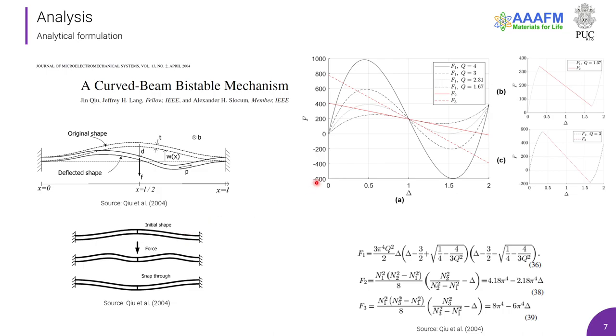The analytical formulation of a curved beam bistable mechanism was developed by Kiel et al., and they found that if a single curved beam is used, then it could not be bistable. This is better explained by these curves and equations. I'll not have enough time to discuss it in depth, but what is important is that for a double curved beam, the force displacement relationship follows the F1 and F3 relationships shown here, and they are related to the first and third modes of buckling. If it was a single beam, you would follow F1 and F2, but F2 would prevent its bistability.